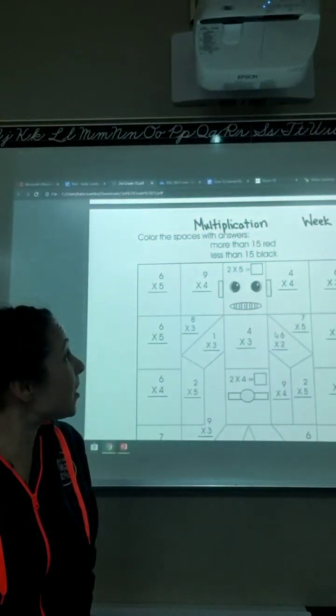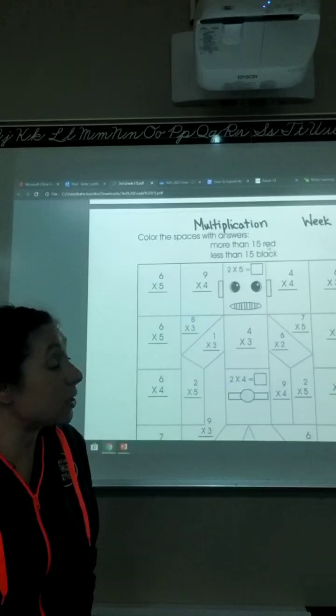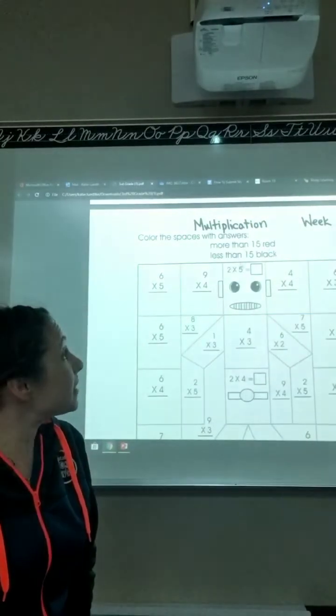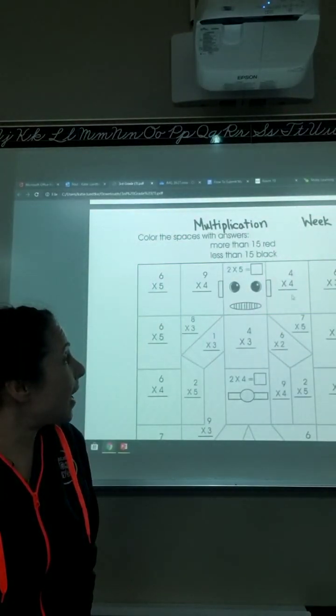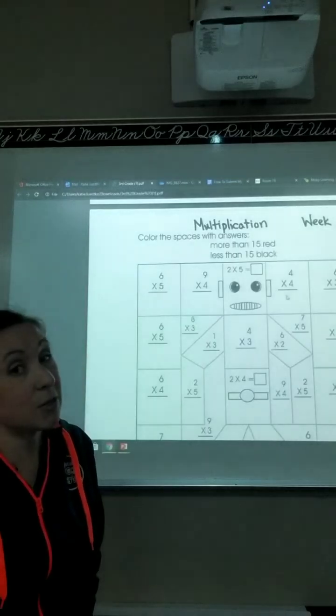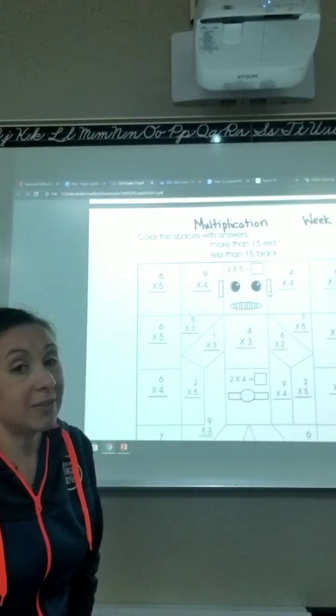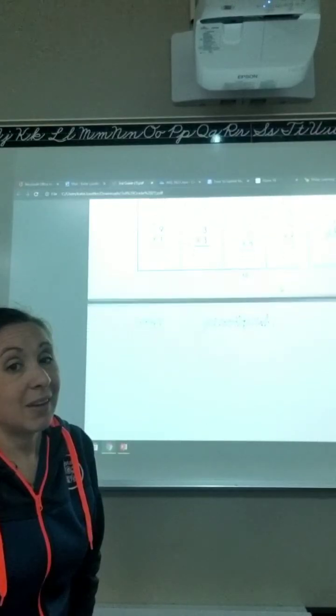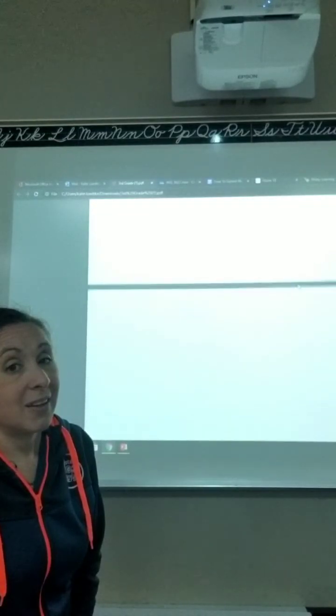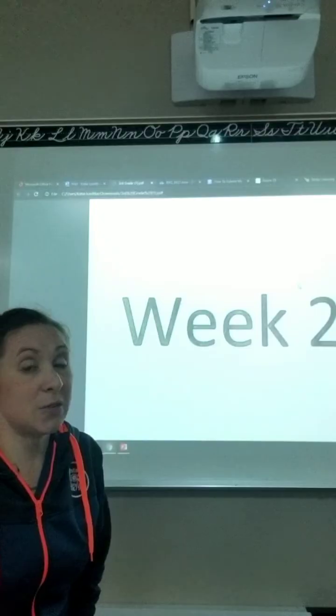Here's that multiplication robot I talked about. So what they'll do is they'll color the spaces with the answers. If it's more than 15, they color it red. I always have the kids write in the answers first before they go ahead and color, just to make sure everything looks good.